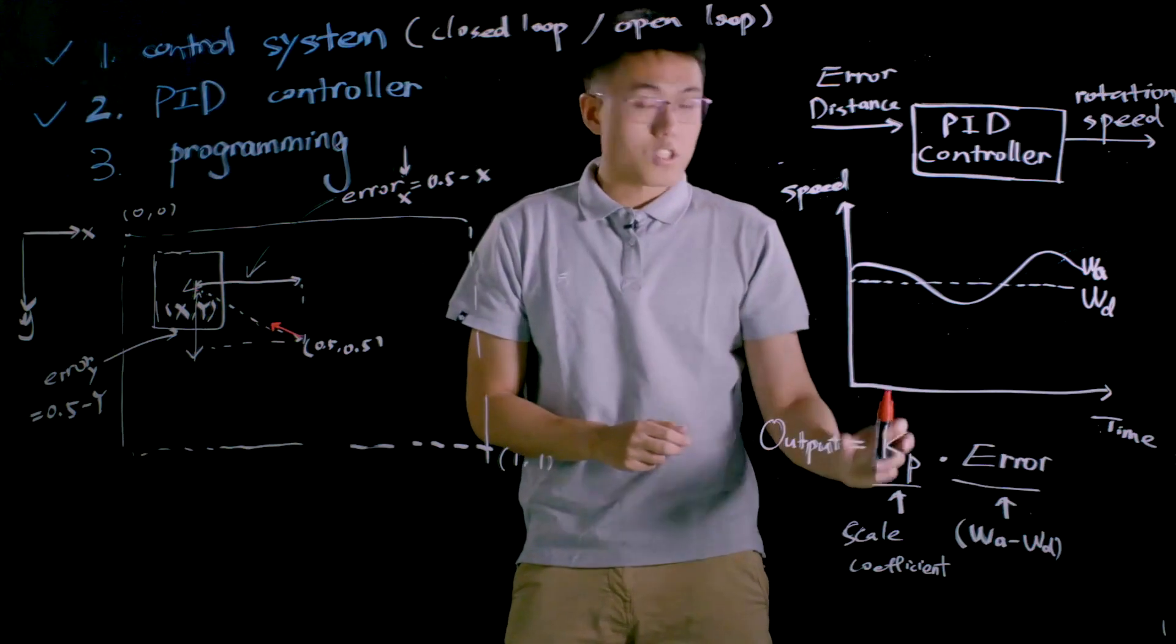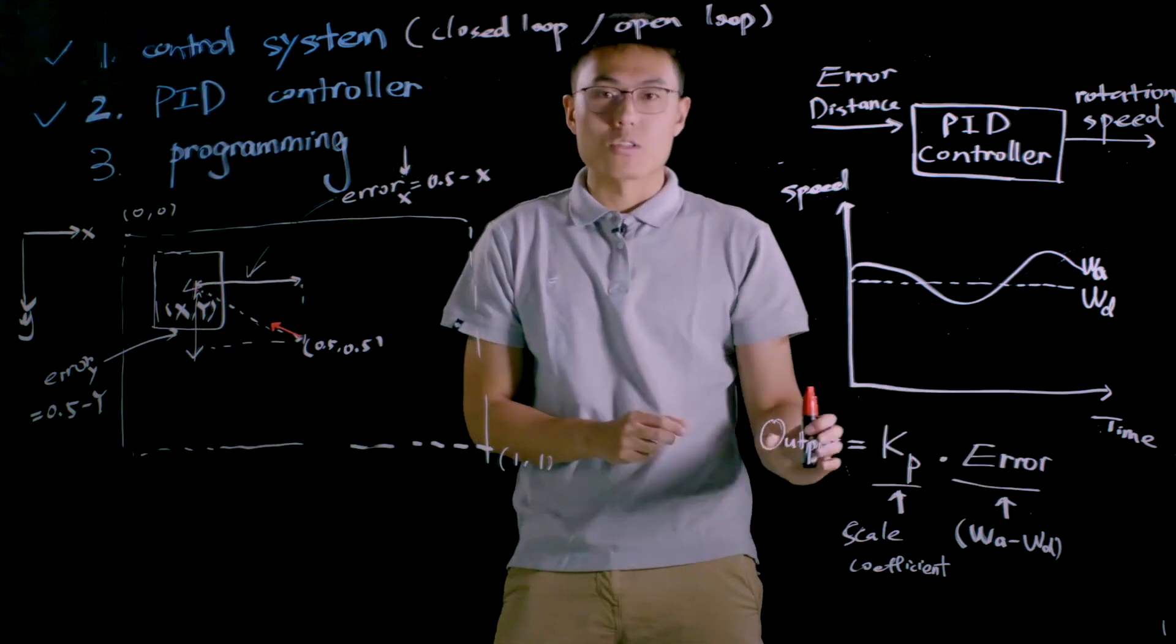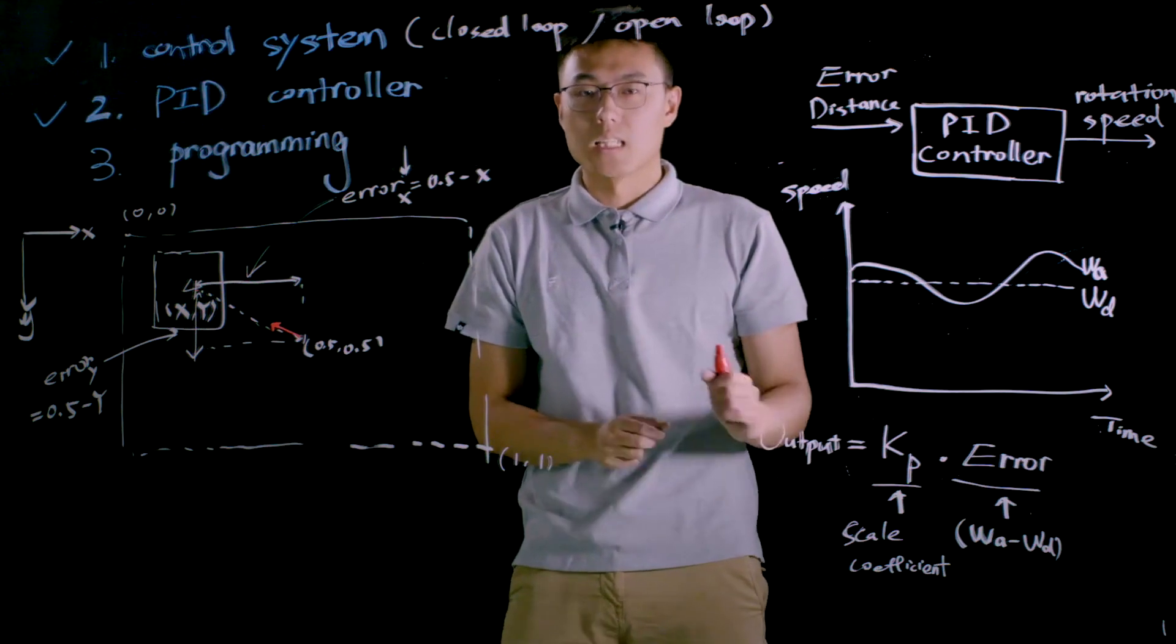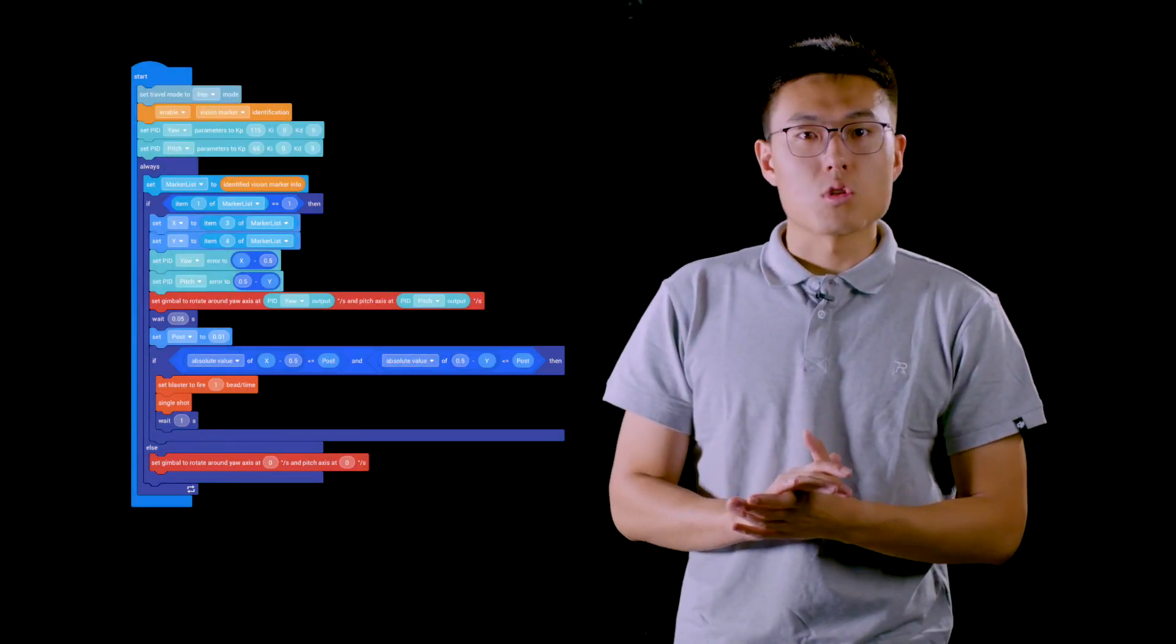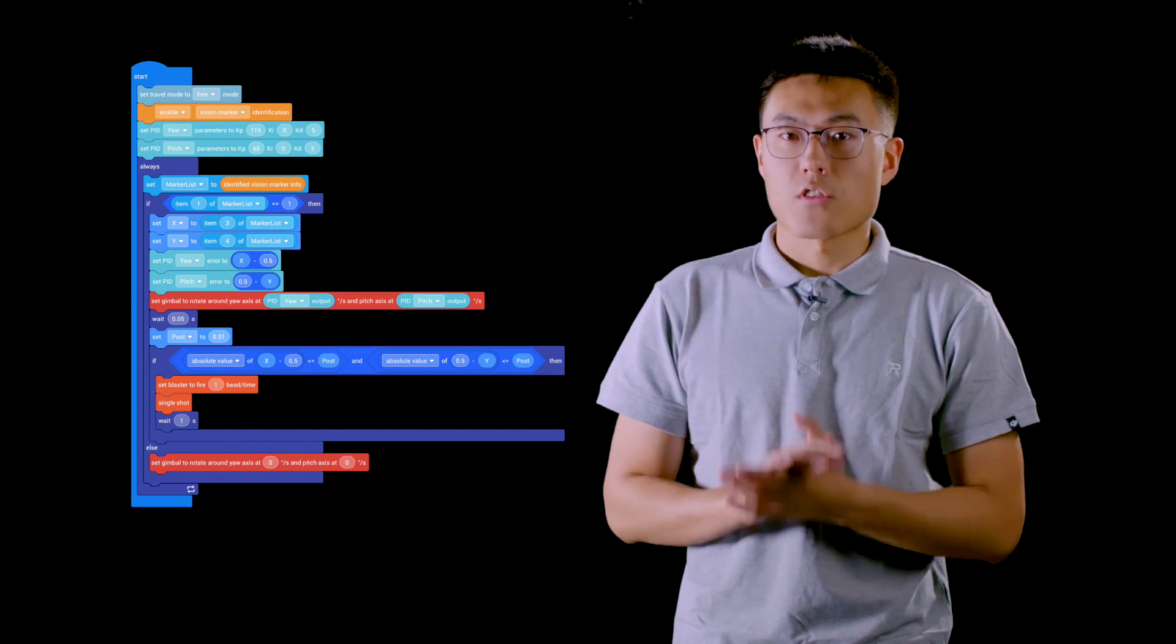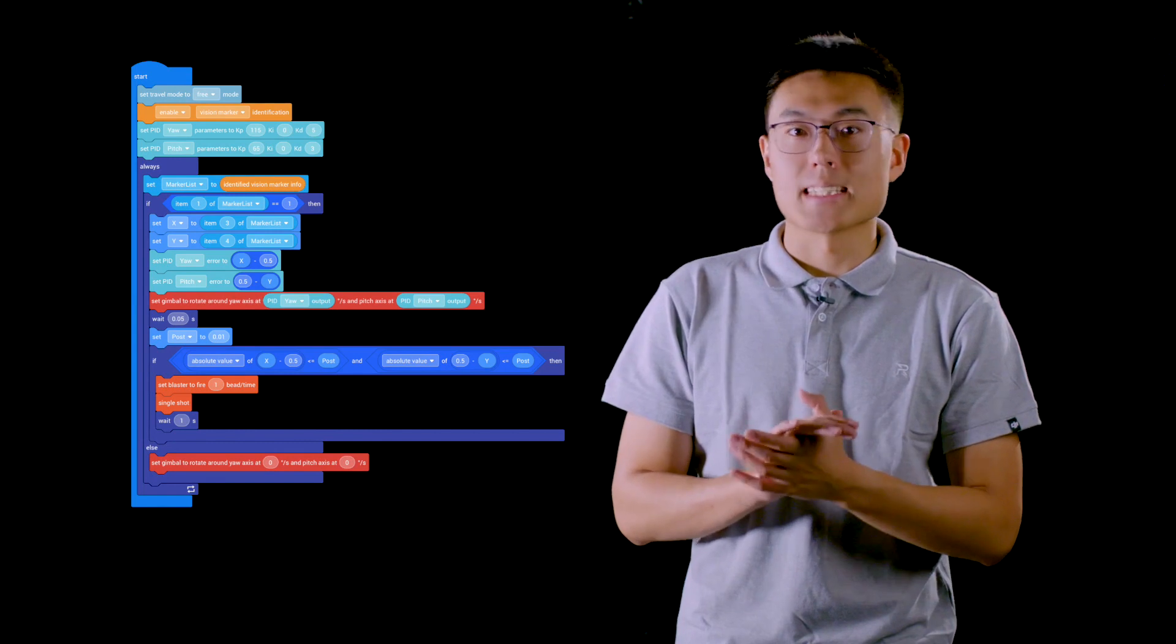During this process, the function of P control is to amplify the error and convert it into the output of rotational speed. Great, it's time to do some programming. The following program allows gimbal to track the visual marker. Let's first take a look at how the program works, and then I will explain the program in detail.